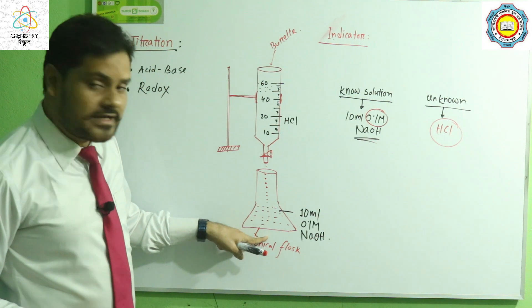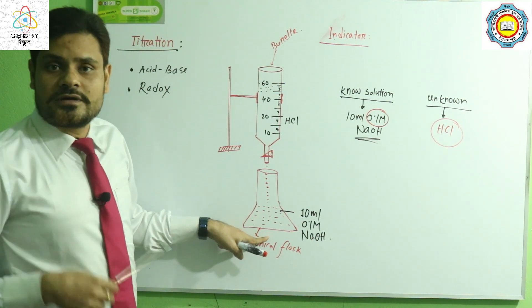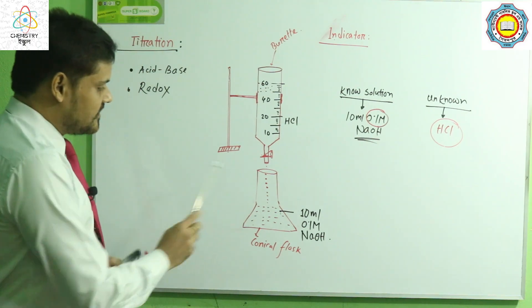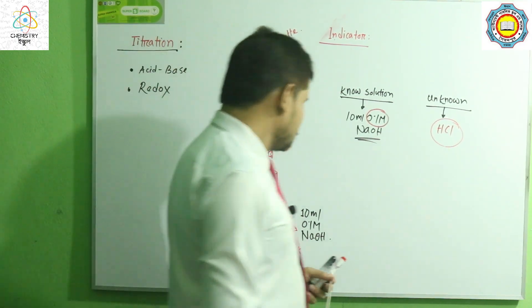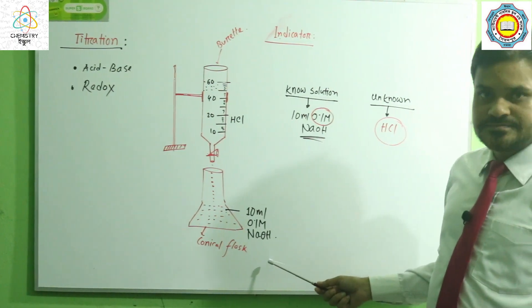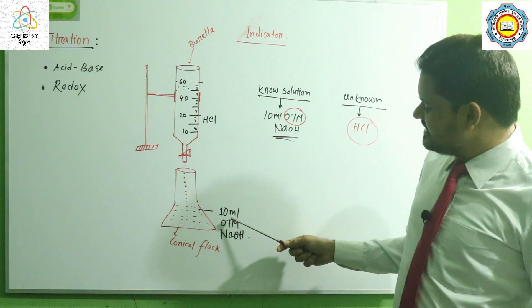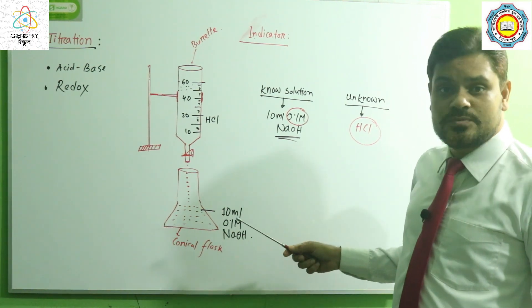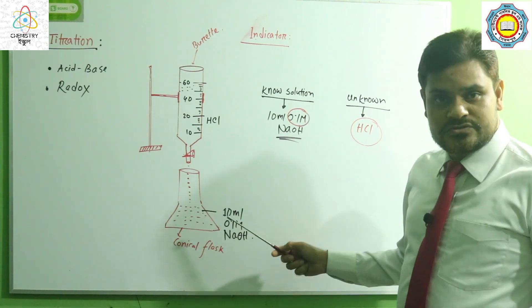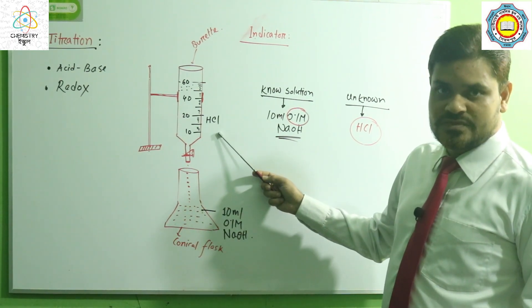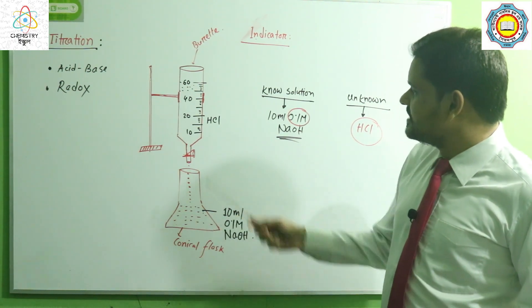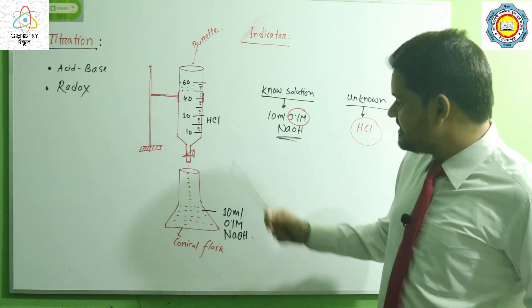The burette contains the HCl solution. When we rotate this stopcock or screw, the solution from the burette comes out into another glass apparatus called the conical flask. Here in the conical flask, we contain 10 milliliter of 0.1 molar sodium hydroxide — this is the known solution — and the HCl is the unknown solution. We use a stand here to keep the burette.